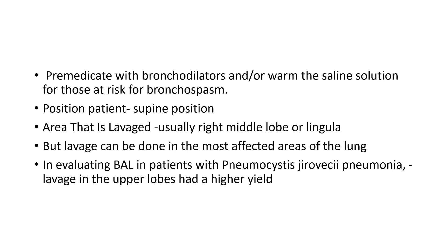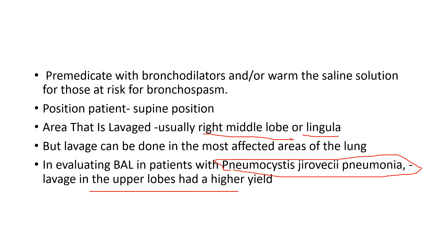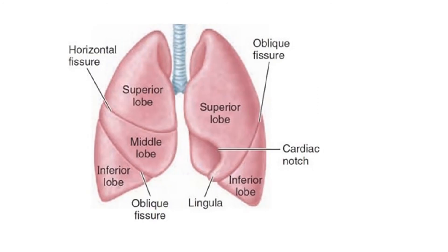To proceed, pre-medicate the patient with bronchodilators or warm saline solution and position the patient supine. The area lavaged is typically the right middle lobe or lingula, but lavage can be performed in the most affected areas. In pneumocystis pneumonia (PCP), the upper lobe has a higher yield. As we pass the bronchoscope, the most common preferred site remains the middle lobe or lingula of the left lung.